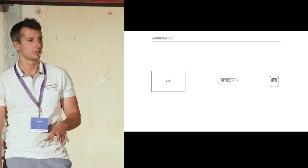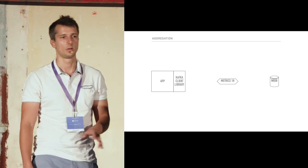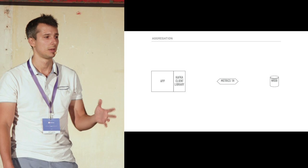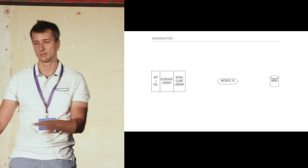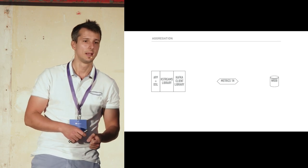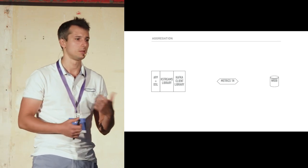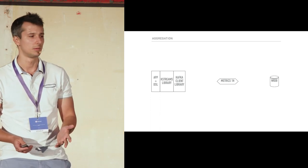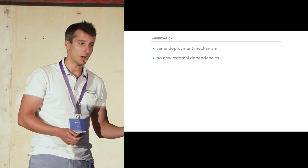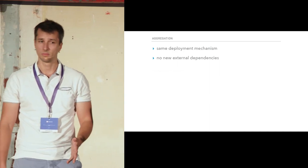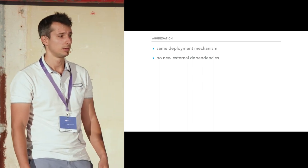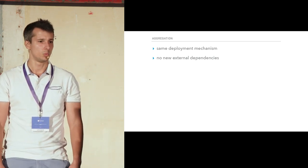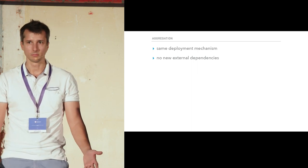When you introduce Kafka Streams, it takes away the consumer and producer from you, and gives you abstractions like source, sink, tables, and streams, plus a DSL to manipulate them. From an operational perspective, we could use the same deployment mechanism, and no new external dependencies would appear for us — which basically means we could go to production quickly.